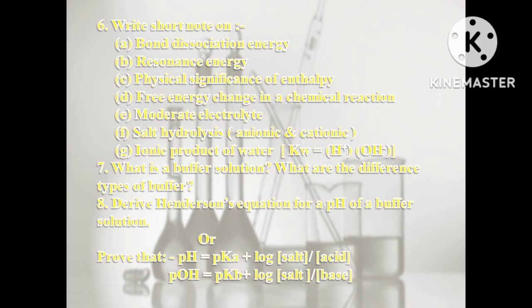Following question 6 includes: 6a is bond dissociation energy, 6b is resonance energy, 6c is physical significance of enthalpy, 6d is free energy change in a chemical reaction, 6e is moderate electrolyte, 6f is salt hydrolysis (anionic and cationic), and 6g is ionic product of water, that is Kw = [H⁺][OH⁻].